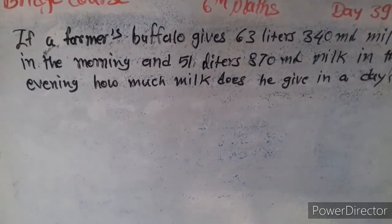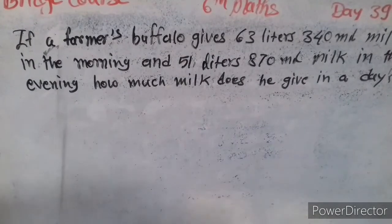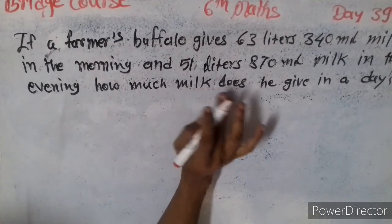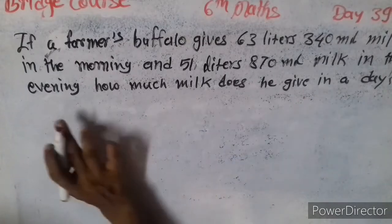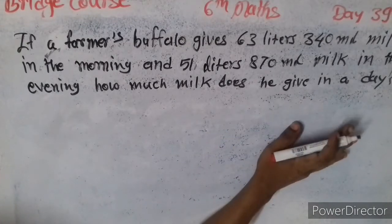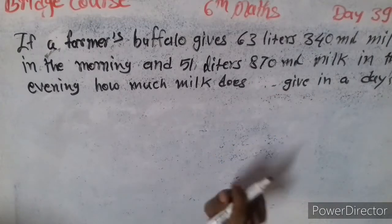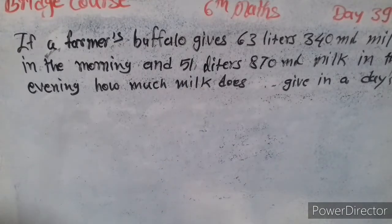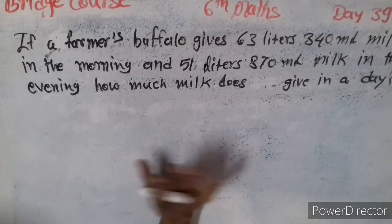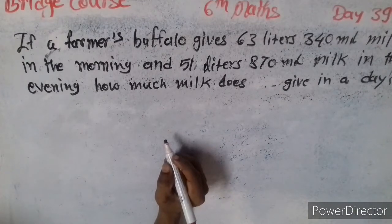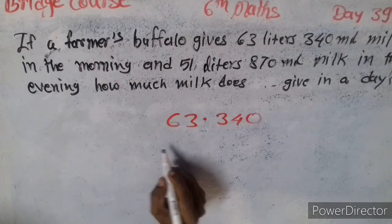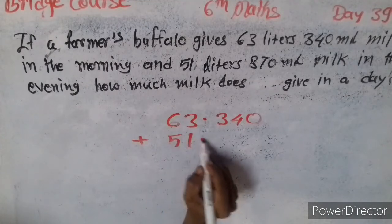Third example: A farmer's buffalo gives 63 liters 340 milliliters of milk in the morning and 51 liters 870 milliliters of milk in the evening. How much milk does it give in a day? So we calculate: 63.340 plus 51.870.